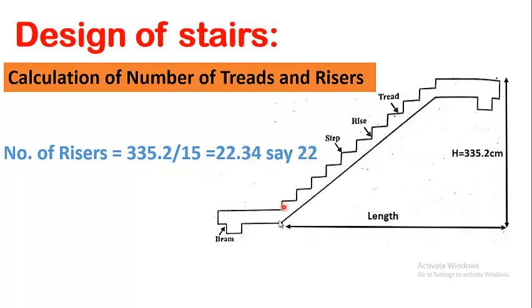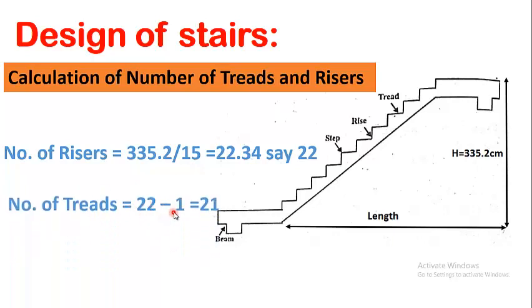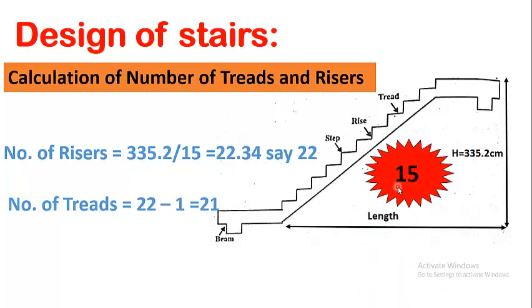The number of treads is always one less than the number of risers, so 22 risers gives 21 treads. However, there is a problem: the requirements of good stairs state that there must be a maximum of 15 steps in a single flight — it should not exceed 15. But here we have 22 steps or 22 risers.